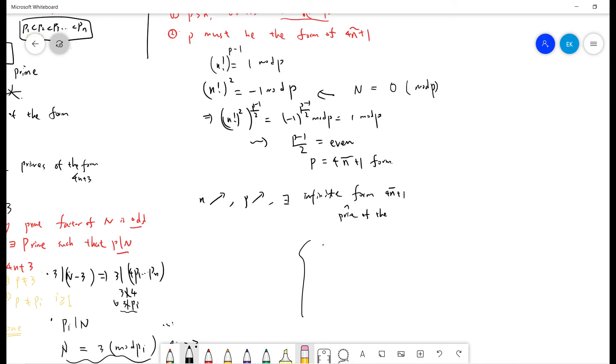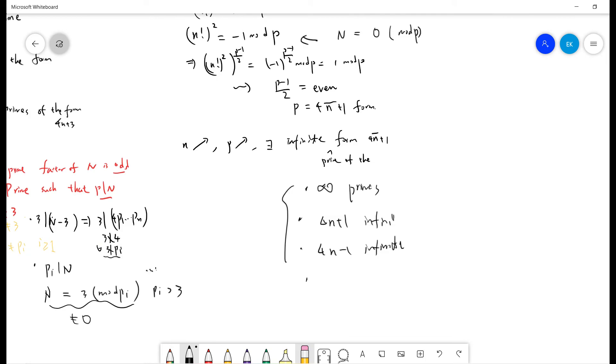So actually, we already proved that there are infinite primes, infinite primes of 4n plus 1, and infinite primes of 4n minus 1. And if you very love number theory, you can prove that an plus b has infinite primes if a and b are coprime.